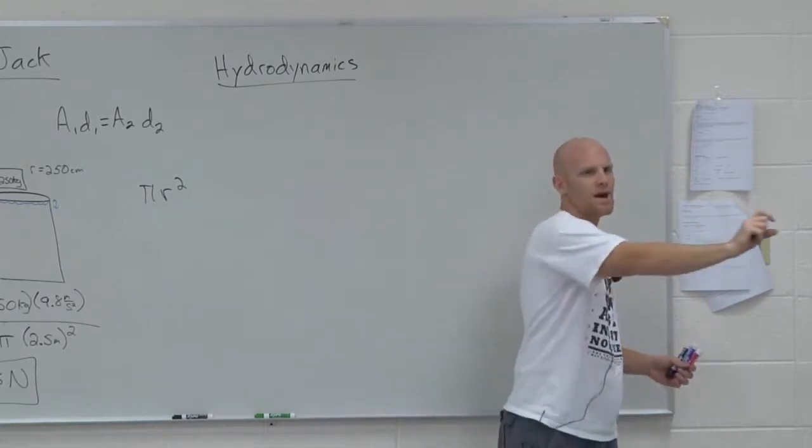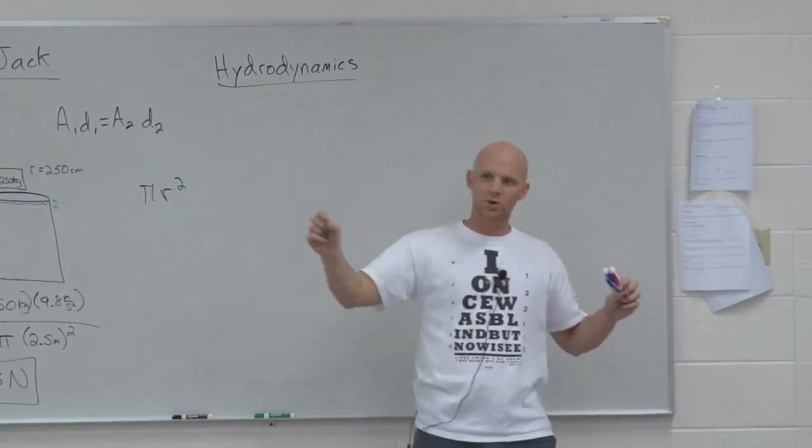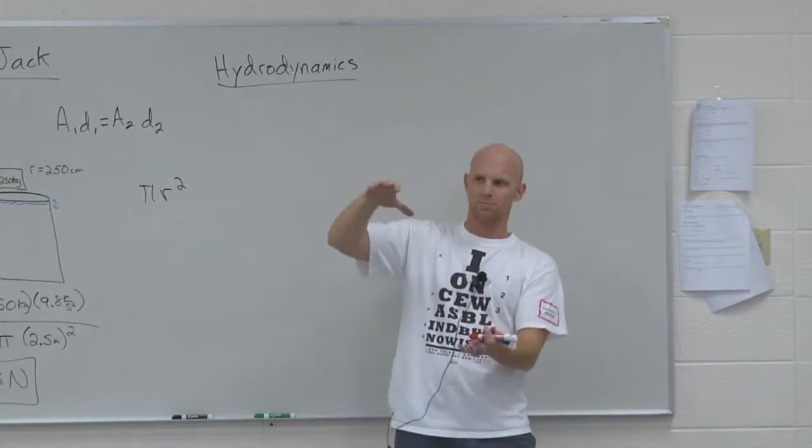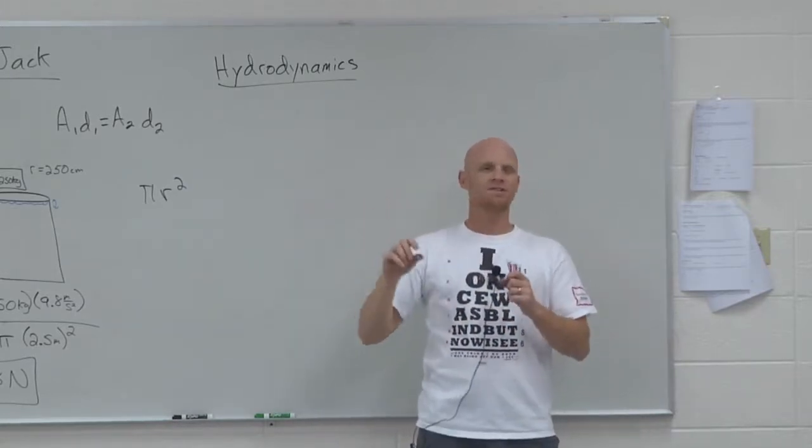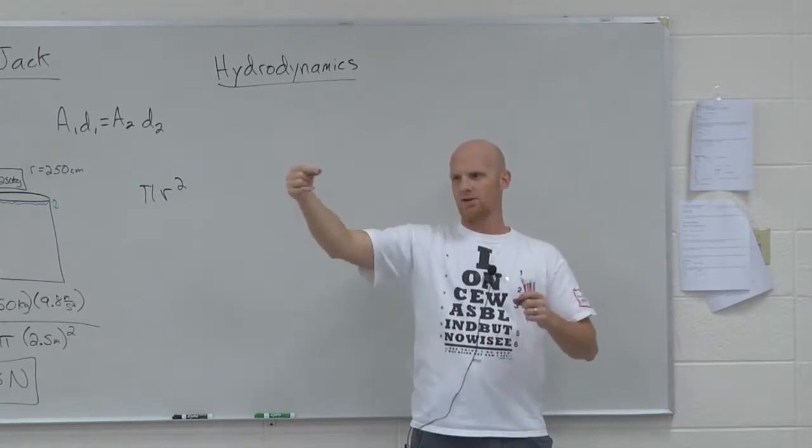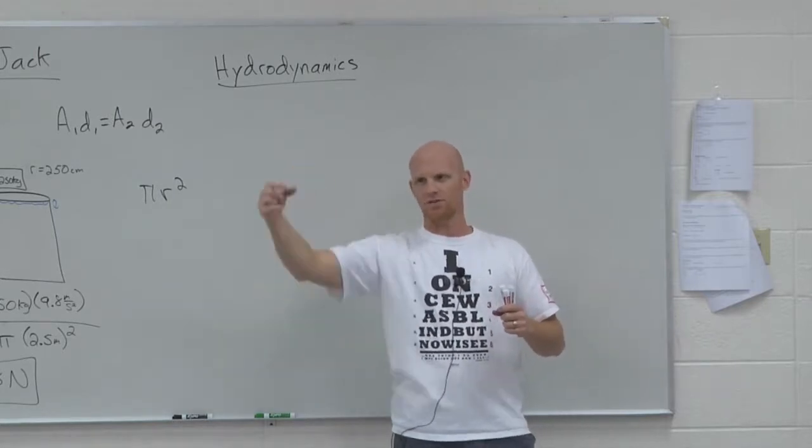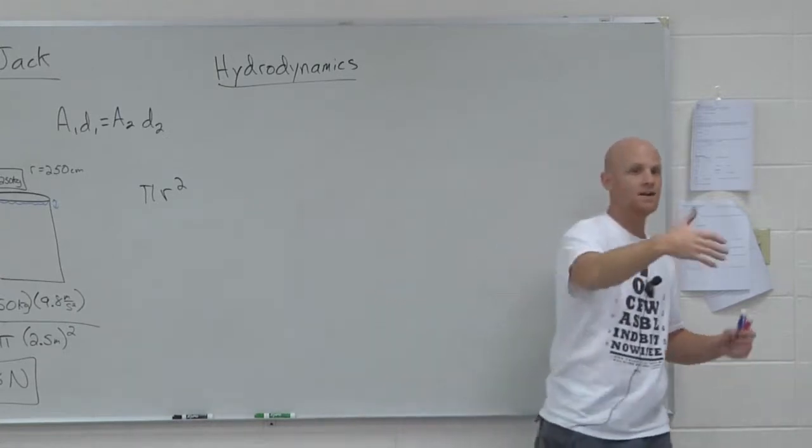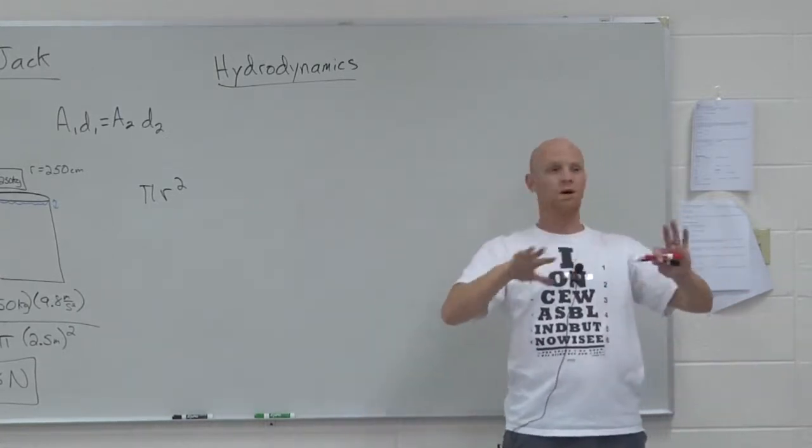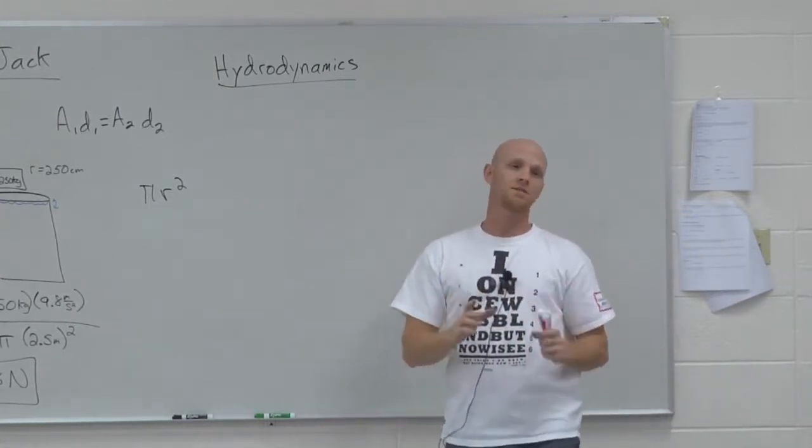Laminar flow is when we have streamlines that don't cross. As the fluid is flowing, it's going to follow a straight line path. If you put a dye in there at different points down the height of the tube, they would follow a straight line and those colored paths would not cross whatsoever. That is called laminar flow.